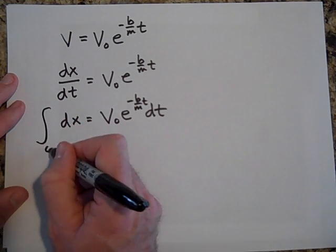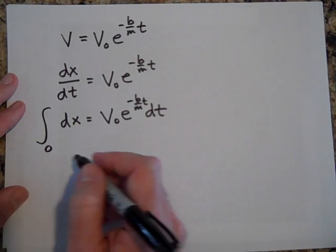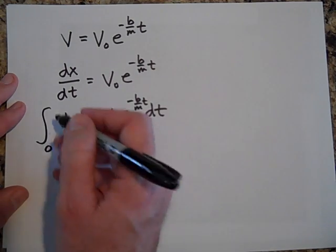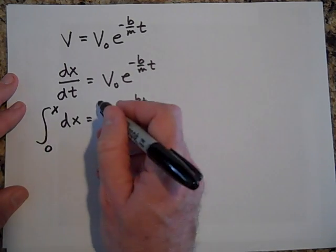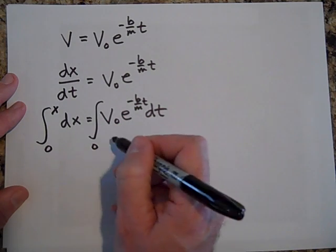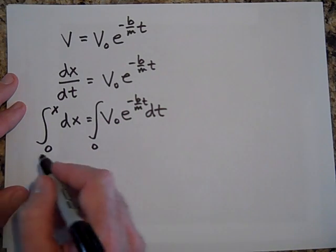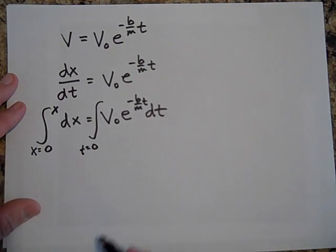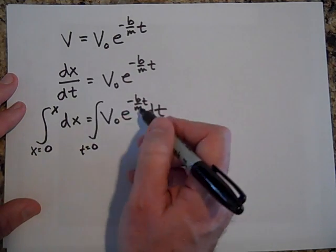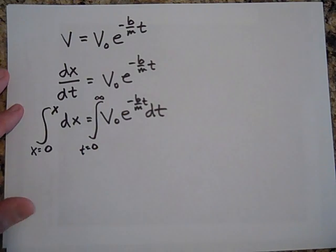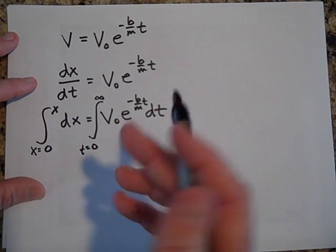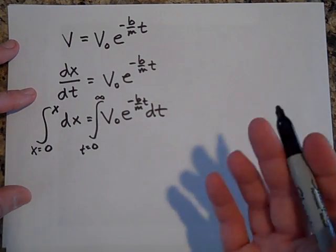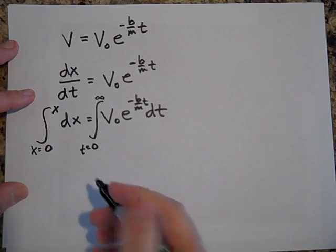And then I'll integrate both sides from zero. It starts at zero, we'll say, and goes to x. Now this side is going to start at zero time, this t equals zero. This is x equals zero. This is t equals zero. And it's going to go to, let's say an infinite time. We're going to wait an infinite time. I know it seems like it should go to infinity in an infinite time, but it's not. It's slowing up.